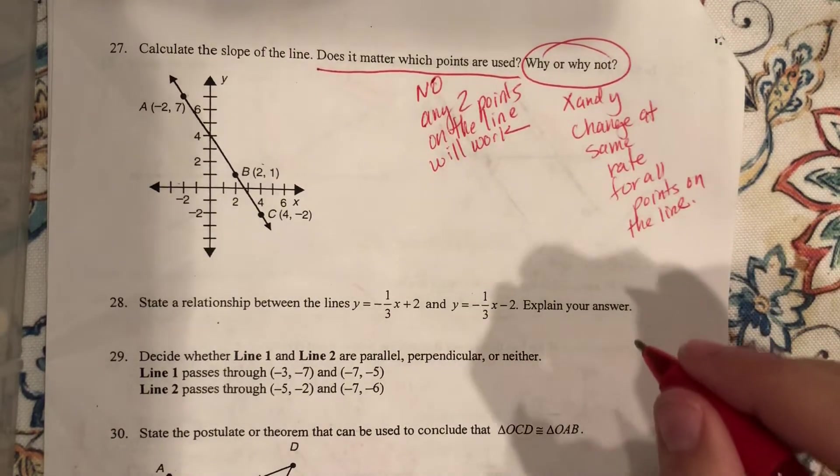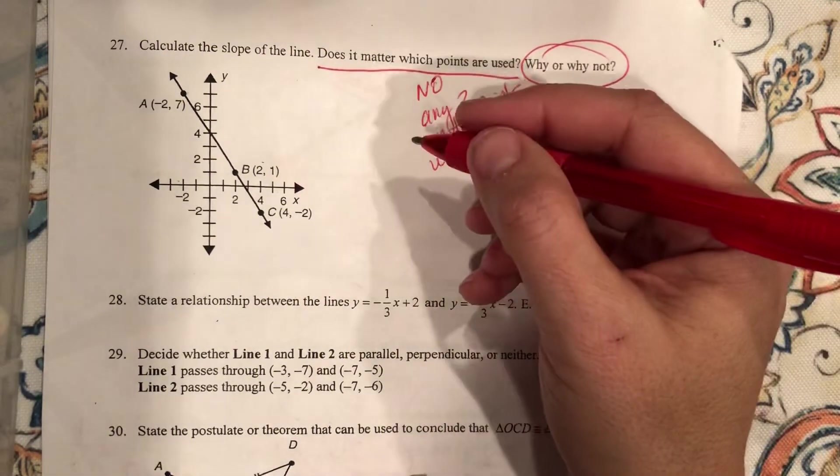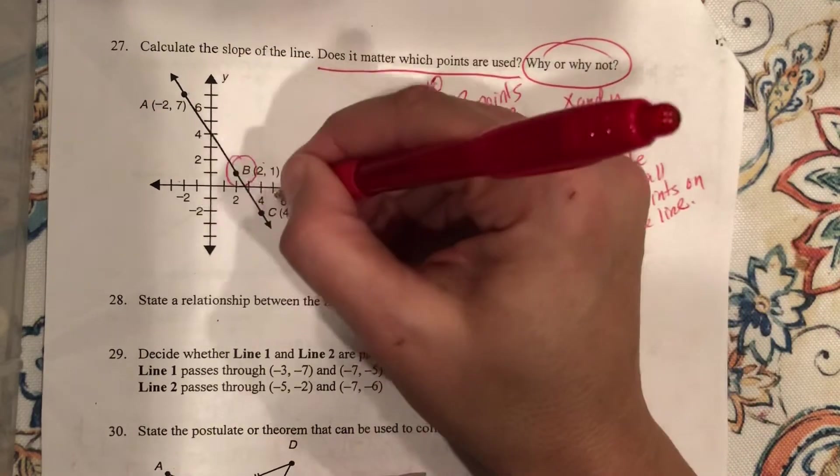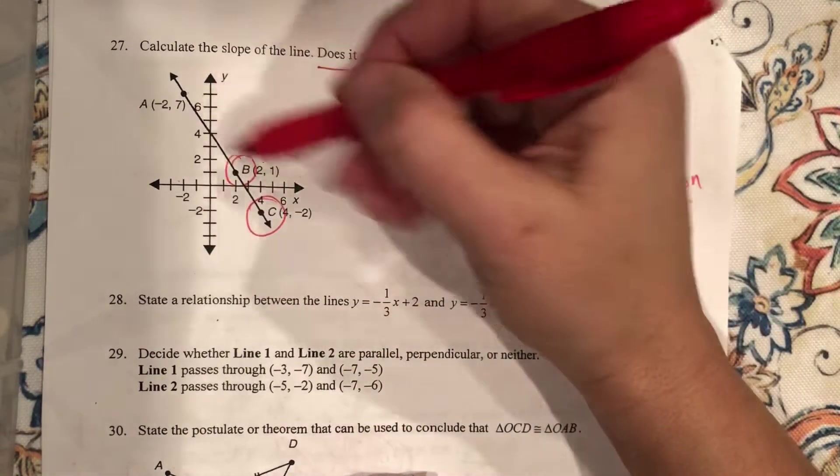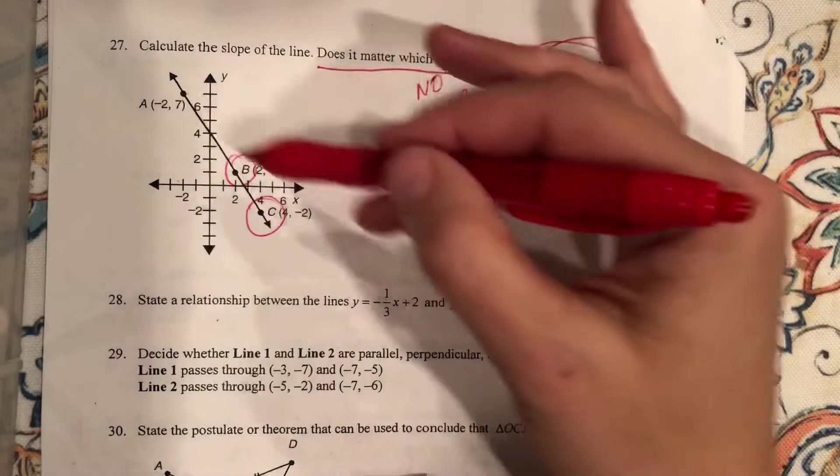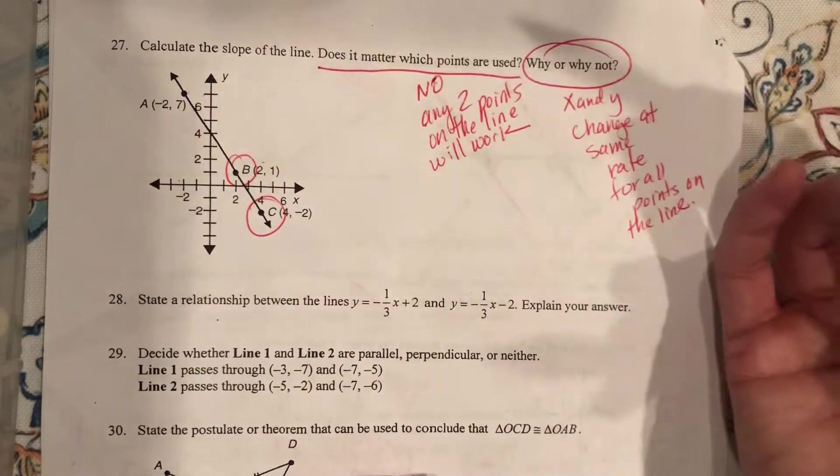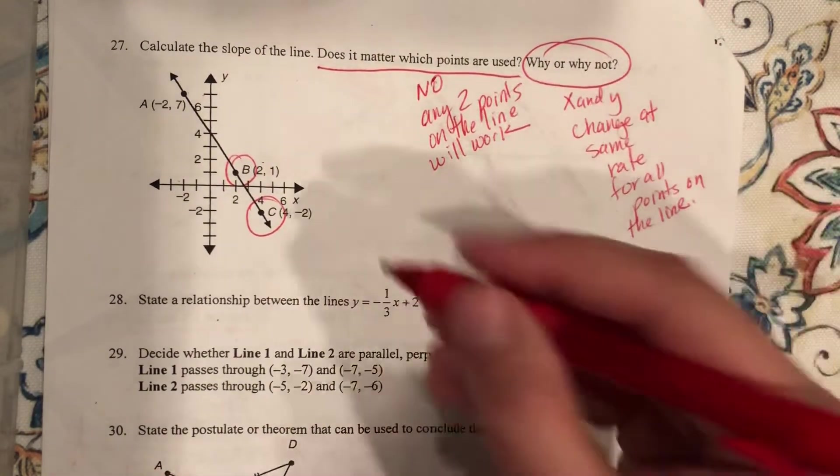Okay, so let's look at this. I'm going to pick, just because I want to, I'm going to pick B and C. Could I have picked A and C? Sure. Could I have picked A and B? Sure. I'm just going to pick B and C.